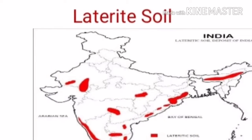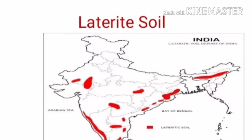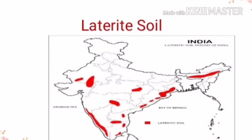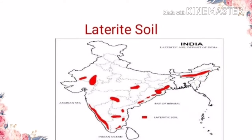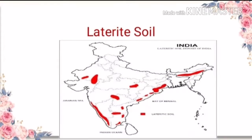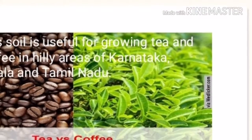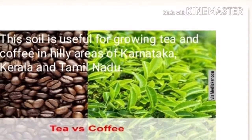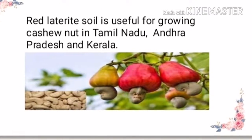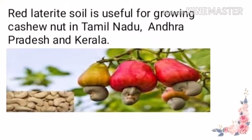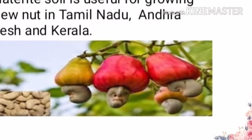Laterite soil is found in Karnataka, Kerala, Tamil Nadu, Madhya Pradesh, and the hilly areas of Odisha and Assam. This soil is very useful for growing tea and coffee in the hilly areas of Karnataka, Kerala, and Tamil Nadu. Red laterite soil in Tamil Nadu, Andhra Pradesh, and Kerala is more suitable for crops like cashew nut.